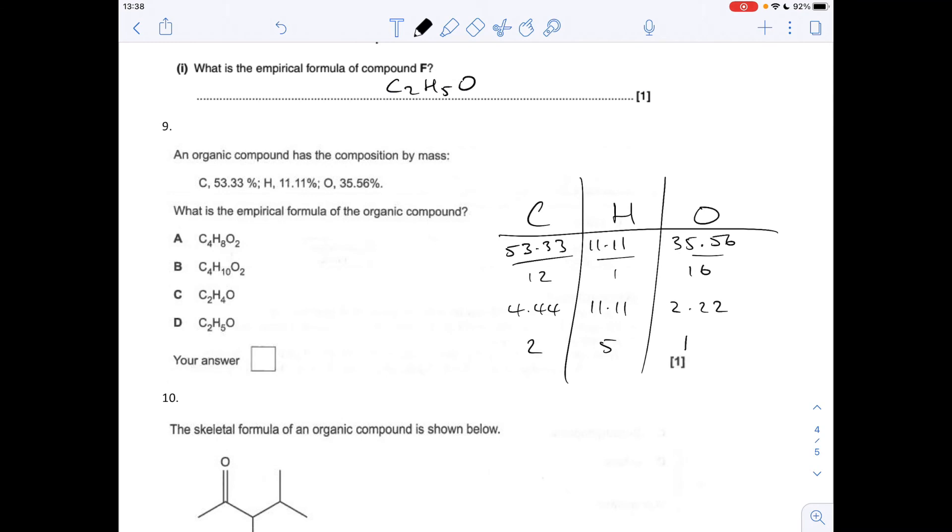Number 9, empirical formulas, you can see I've already worked it out. So we've got a ratio of 2 to 5 to 1 for the carbon, hydrogen, oxygen, so the answer was D.